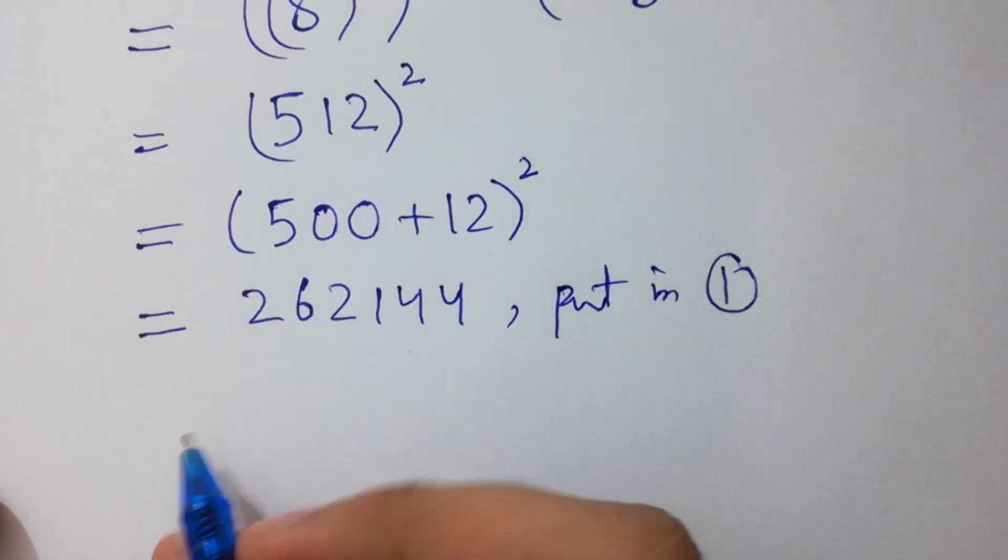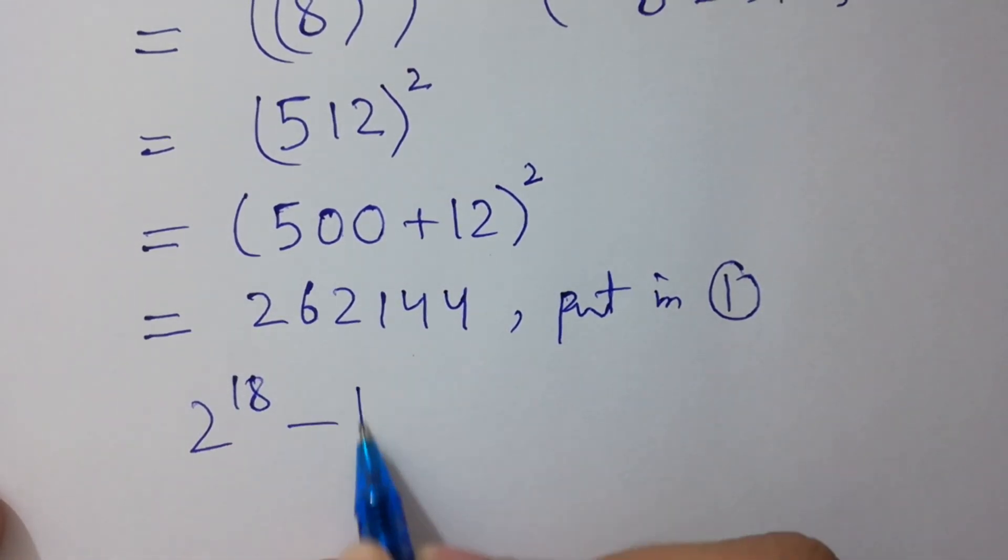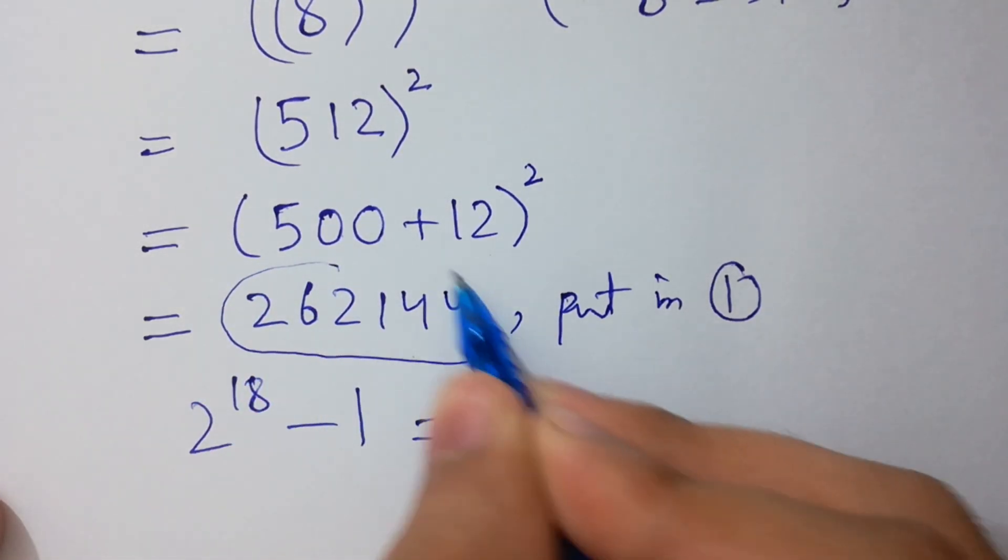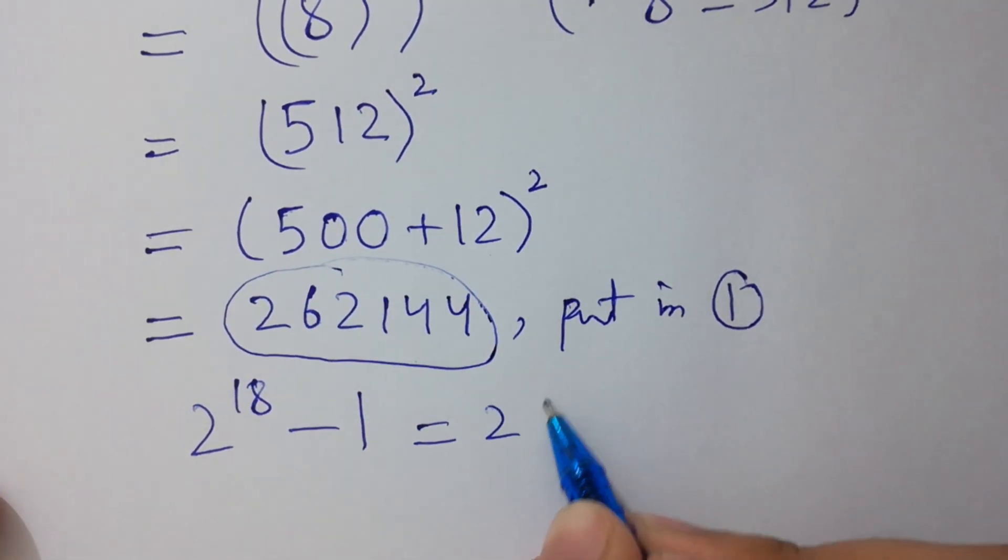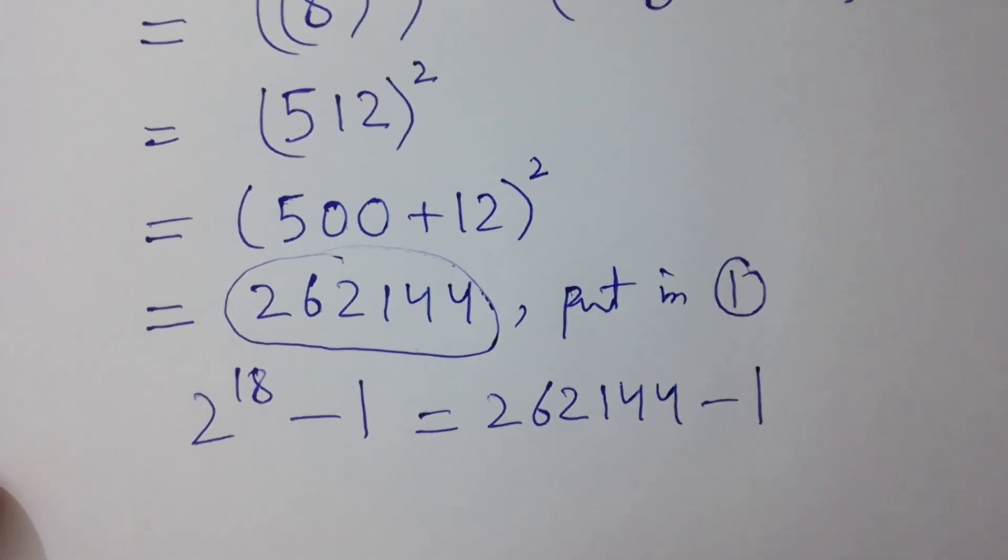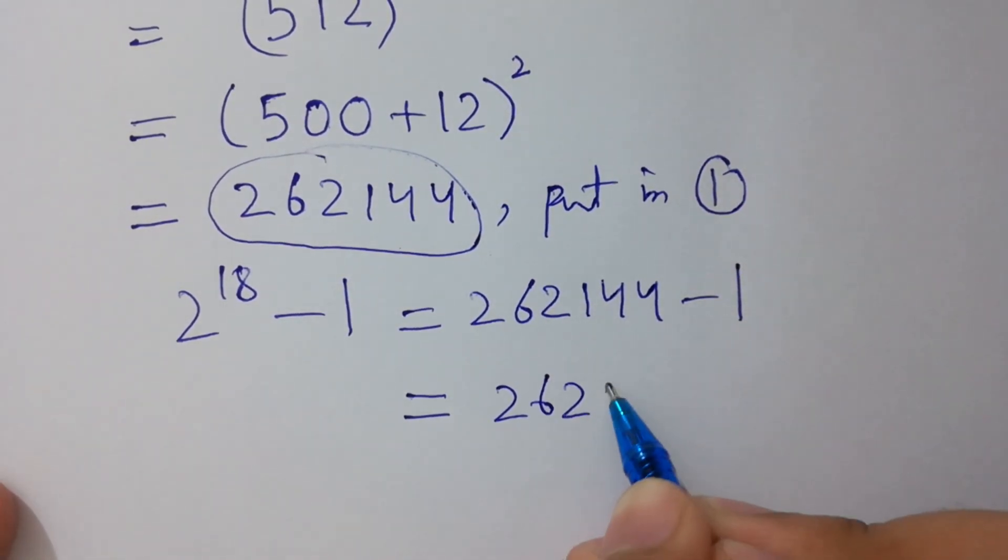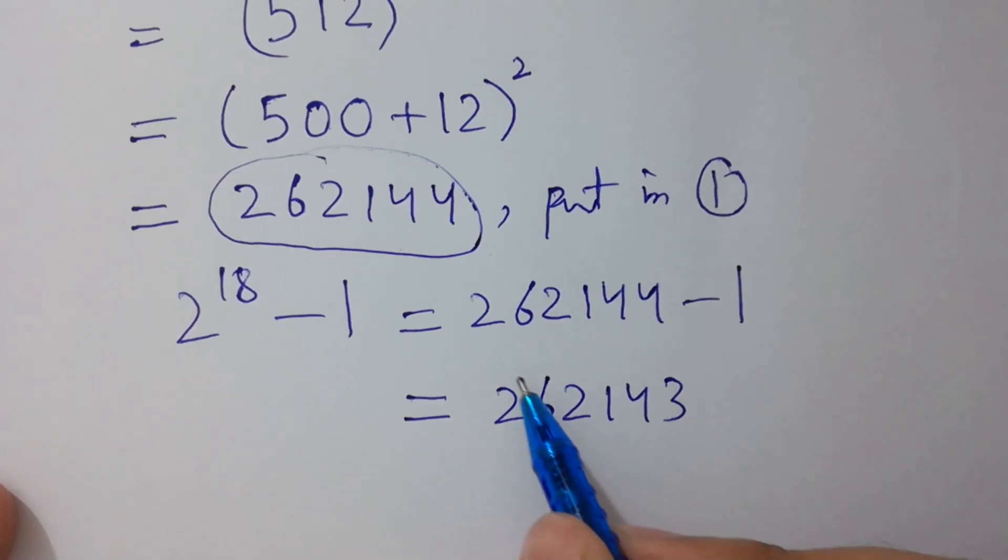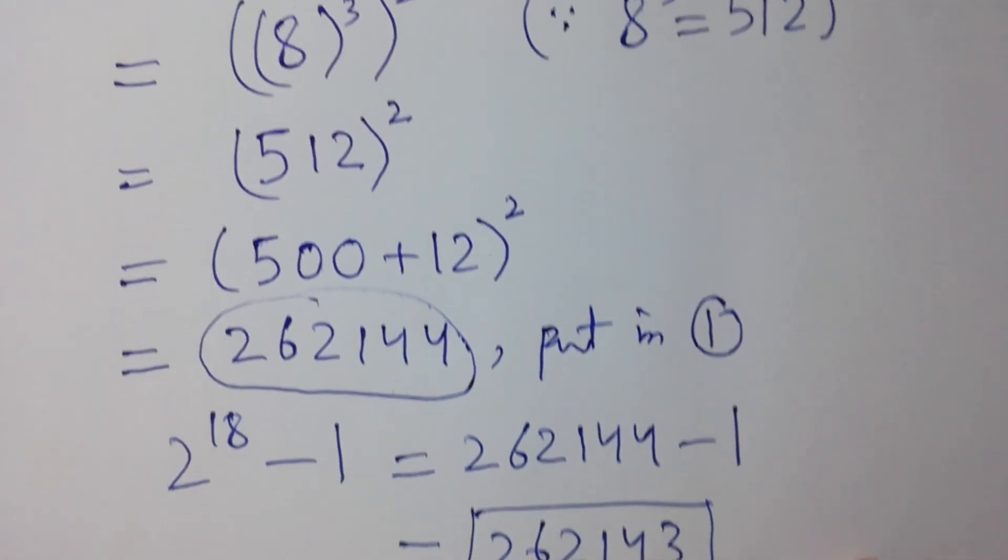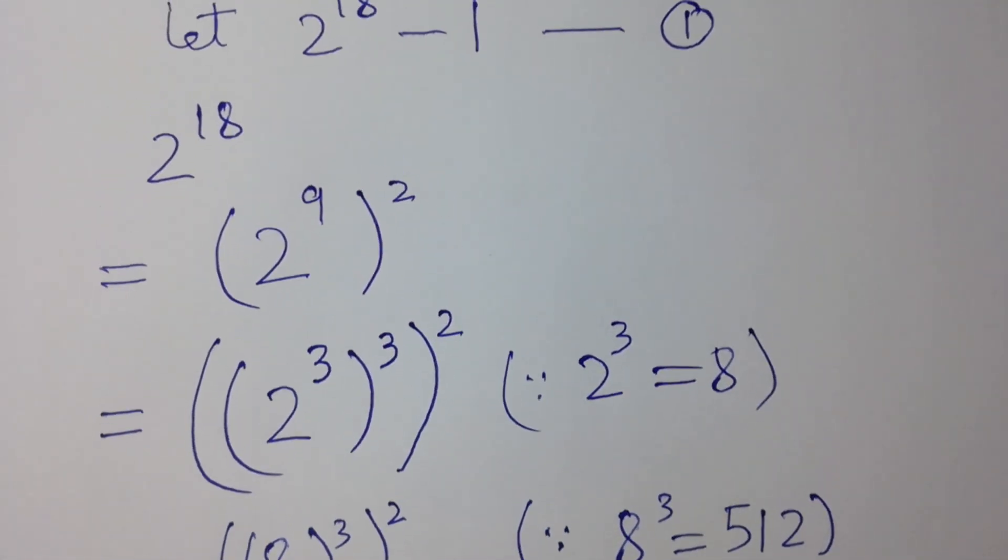2 to the power 18 minus 1. Put the value: 262,144 minus 1, which equals 262,143. That's our correct answer. Thanks for watching this video. Please subscribe to this channel to get notifications of